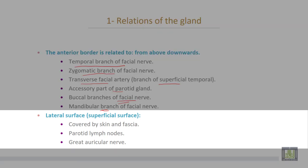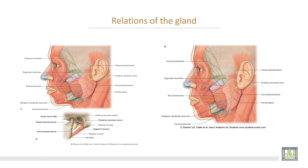The lateral or superficial surface of the gland is covered by skin and fascia, parotid lymph nodes, and the great auricular nerve. The anterior border structures include the temporal, zygomatic, buccal, and mandibular branches of the facial nerve. The parotid duct exits here, and above the duct lies the accessory part of the parotid gland.